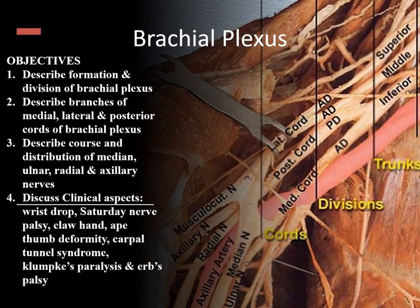Moving on to the brachial plexus. You should know the formation and divisions, and be able to describe the branches from the medial, lateral, and posterior cords. You should know the course and distribution of the median, ulnar, radial, and axillary nerves. Clinical aspects that could be asked include: wrist drop, claw hand, ape thumb deformity, carpal tunnel syndrome, Klumpke's paralysis, Erb's palsy, and Saturday night palsy.